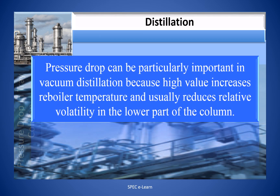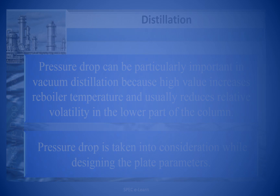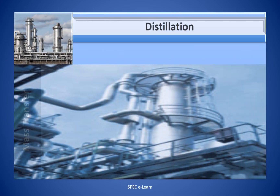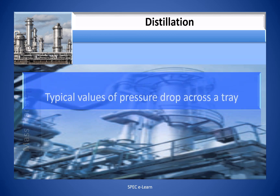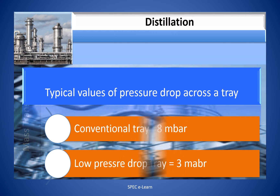Pressure drop can be particularly important in vacuum distillation because high values increase reboiler temperature and usually reduce relative volatility in the lower part of the column. Pressure drop is taken into consideration while designing the plate parameters. The typical values of pressure drop across the tray are: for a conventional tray, 8 millibar; and for a low pressure drop tray, 3 millibar.